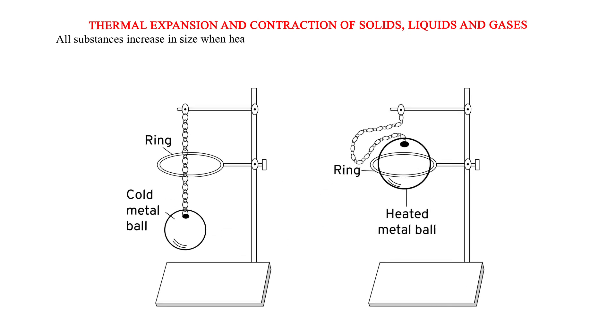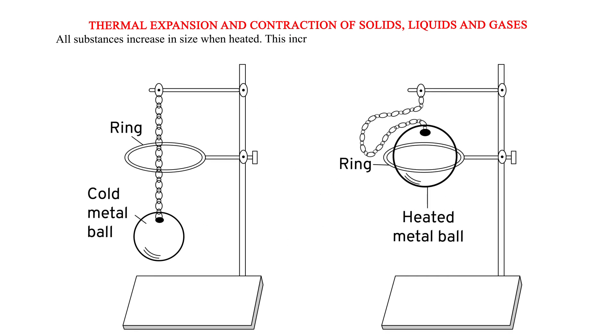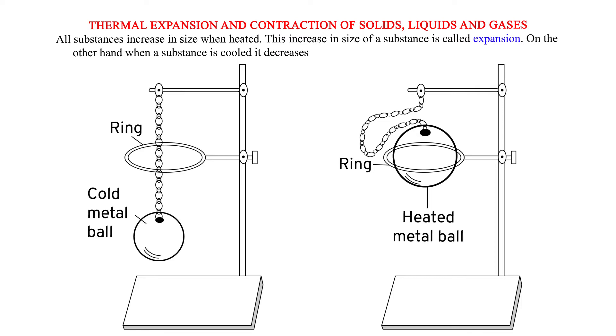Thermal expansion and contraction of solids, liquids, and gases. All substances increase in size when heated. This increase in size of a substance is called expansion. On the other hand, when a substance is cooled it decreases in size. This decrease in size is called contraction.